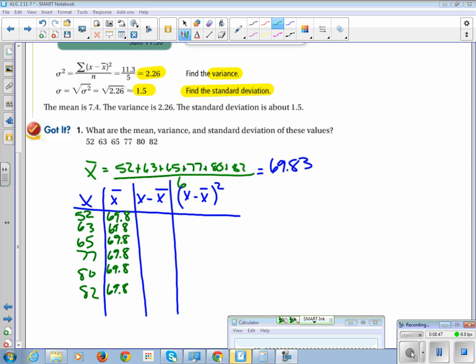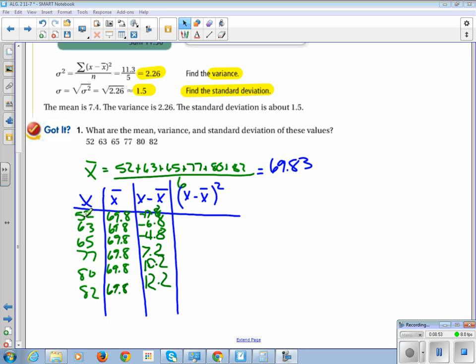So let's put all those pieces of information in here: 52, 63, 65, 77, 80, 82. The mean is 69.8 all day long. When you subtract the data value from the mean, the first one is negative 17.8, next is negative 6.8, then negative 4.8, then 7.2, then 10.2, then 12.2. So the next thing we're going to do is square all these values. When you take the squares of each of these differences, you get 316.84, 46.24, 23.04, 51.84, 104.04, and lastly 148.84.